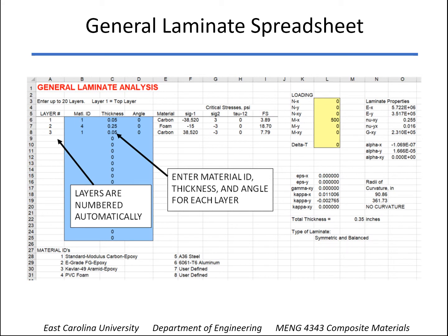So I've got this spreadsheet, General Laminate, where you enter the layers from top to bottom. One will be the top layer.